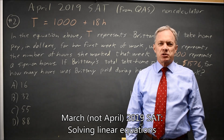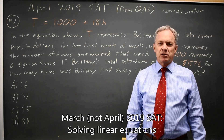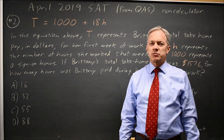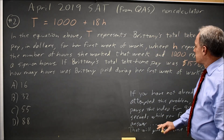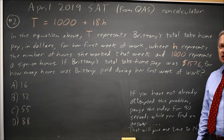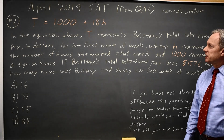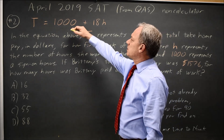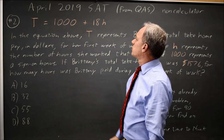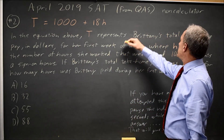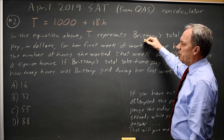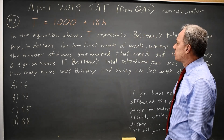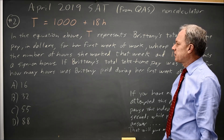This is non-calculator question number two from the March 2019 SAT. If you have not already tried this problem, please pause the video while you work through it and then come back to hear my explanation. In this problem we're given an equation t equals 1,000 plus 18h, where t is Britney's total take-home pay for her first week of work, h is her number of hours, and 1,000 is a sign-on bonus.